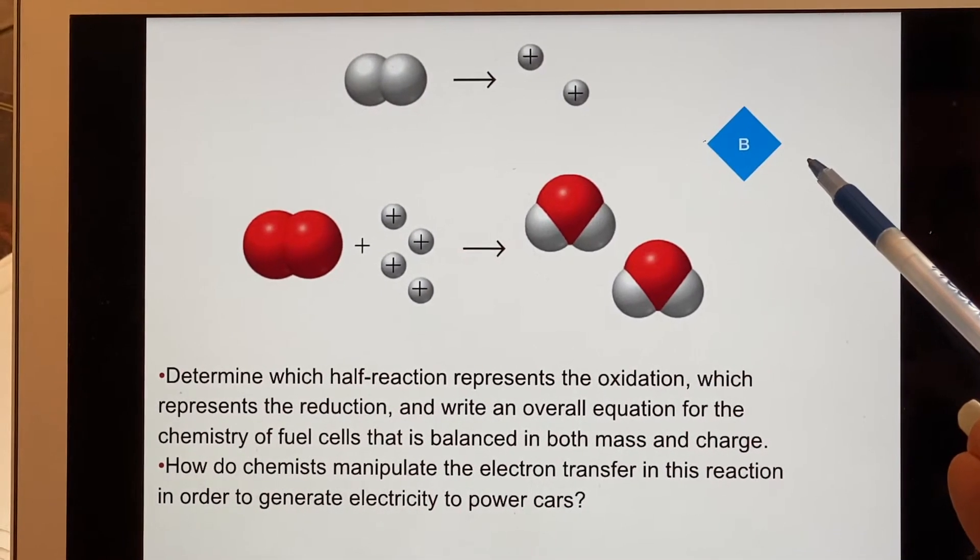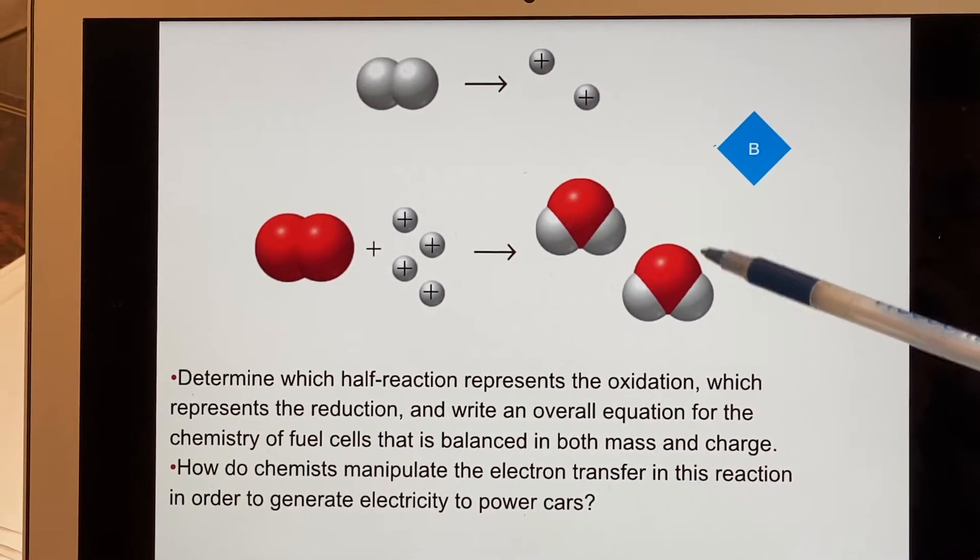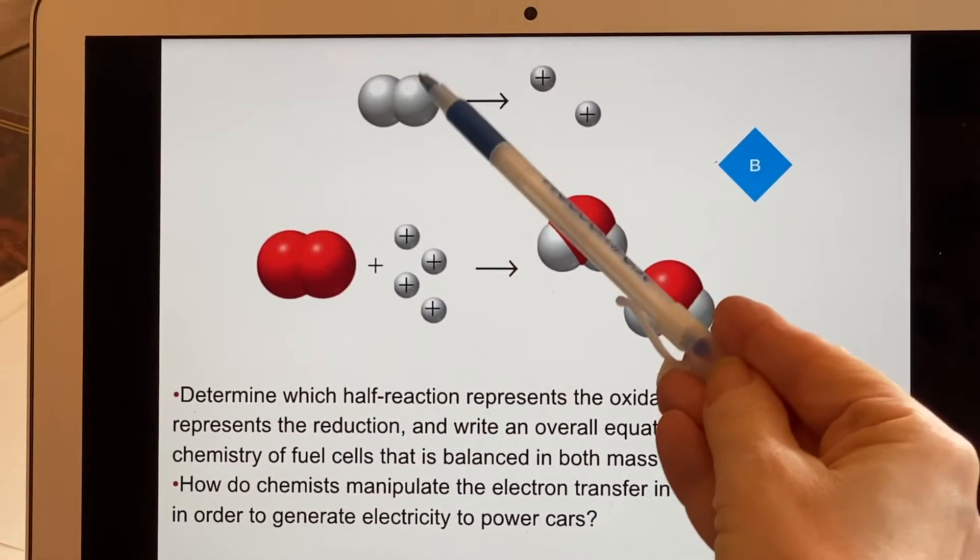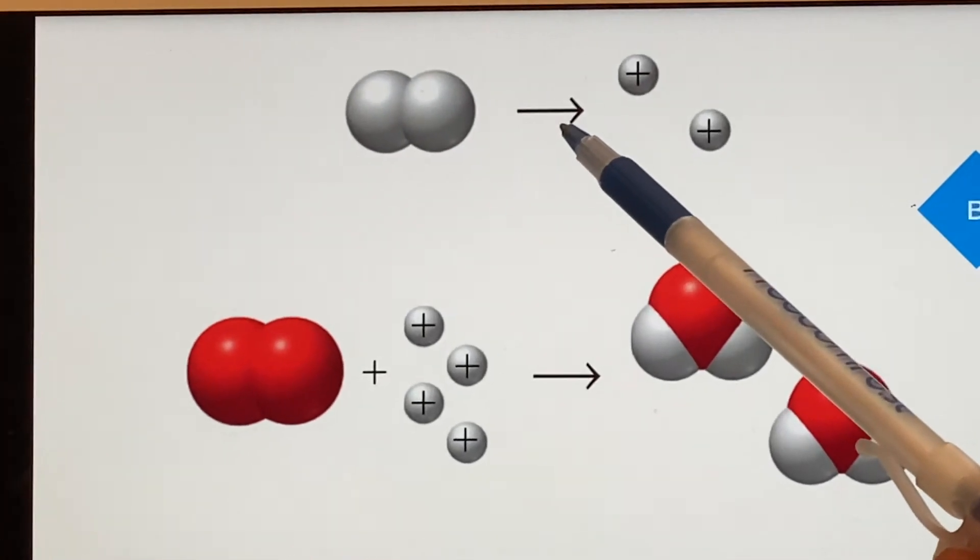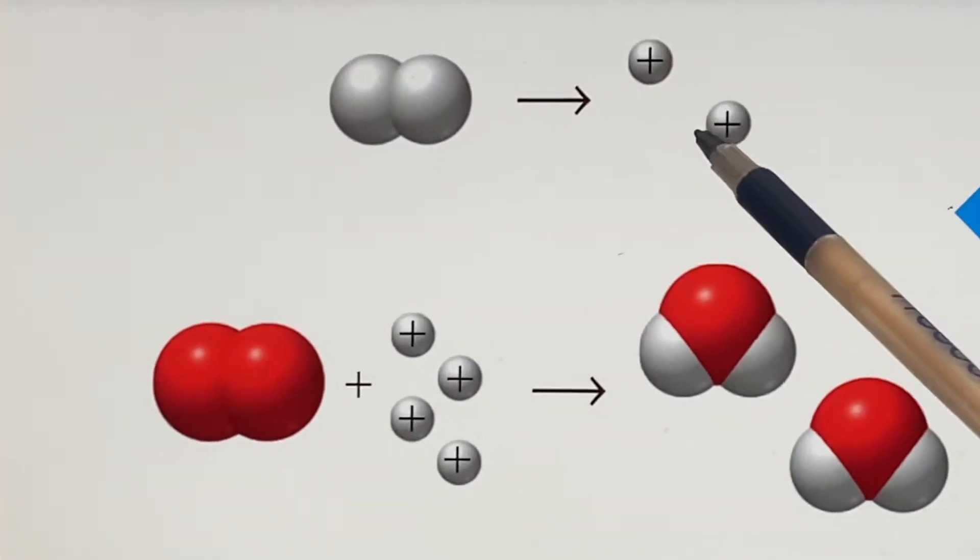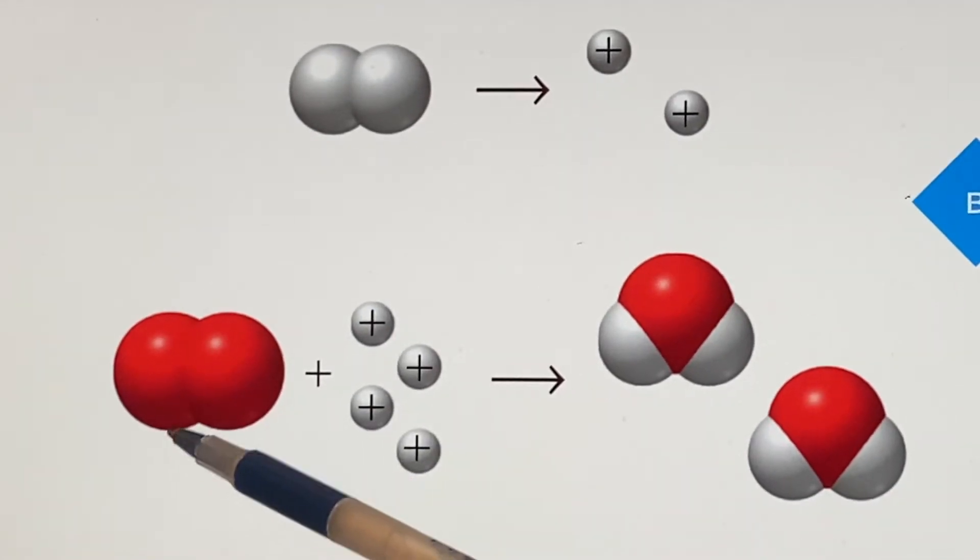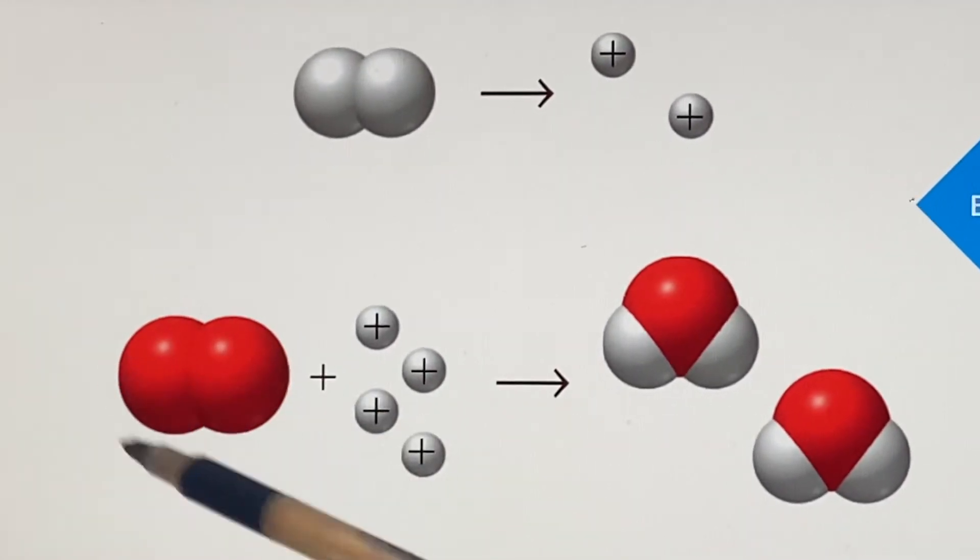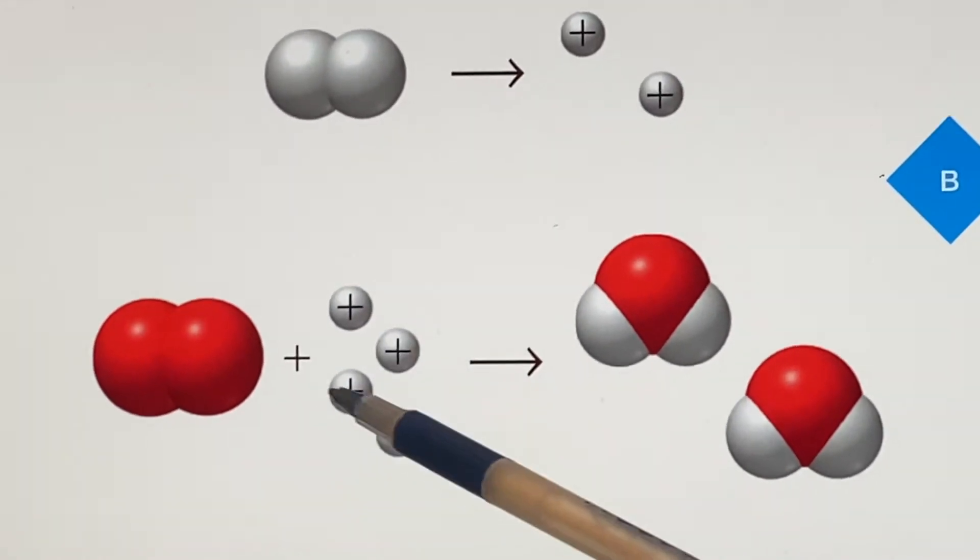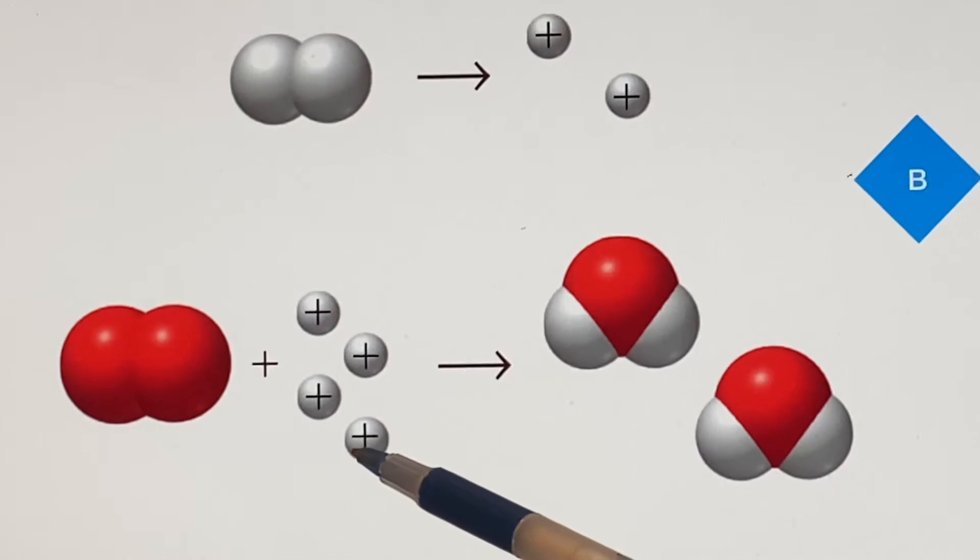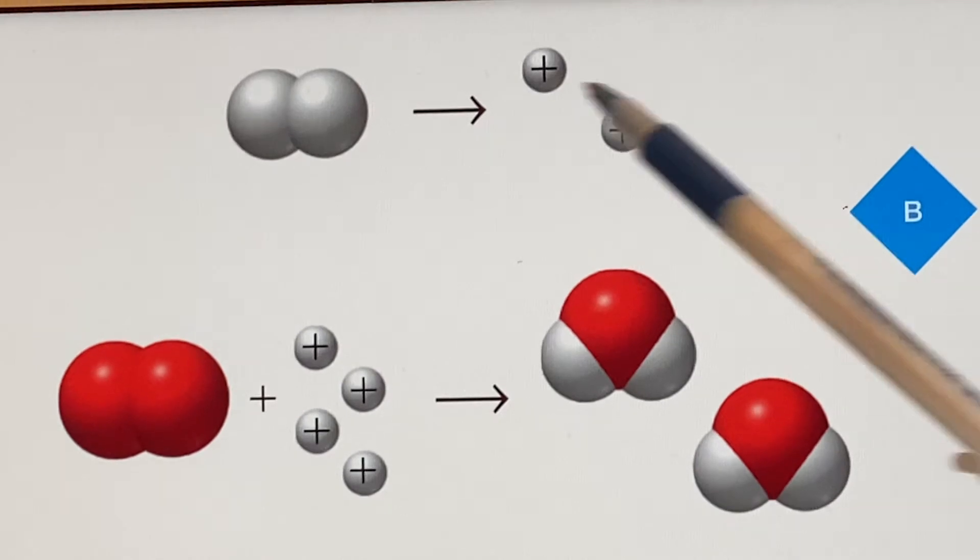On this slide we have some visual representations of what I just wrote. We have hydrogen H2 producing protons, each of those is an H with a positive sign. Over here I have oxygen, diatomic oxygen the way we normally encounter it, and then four of these protons show up enabling this to come apart and form water. But what you can see from this is that we don't have these balanced in terms of charge.